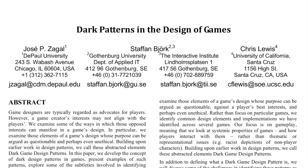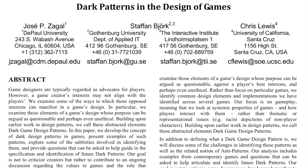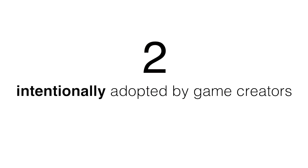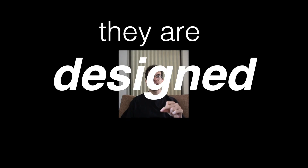The paper I'm introducing today develops a classification of the different kinds of dark patterns present in video games. According to the authors, dark patterns are game elements that have two characteristics. Firstly, they generate a negative experience among players. And secondly, they are intentionally adopted by game creators to create negative experiences. In other words, dark patterns do not happen by chance or by mistake. They are not bad design — they are designed to be bad.